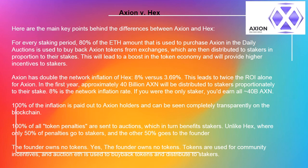Axion has double the network inflation of HEX — 8% versus 3.69%. This leads to twice the ROI for Axion. In the first year, approximately 40 billion AXN will be distributed to stakers proportionately to their stake.